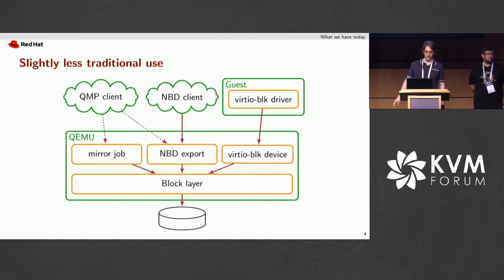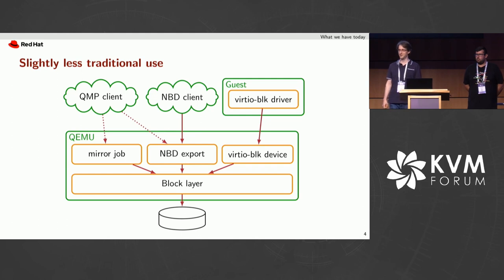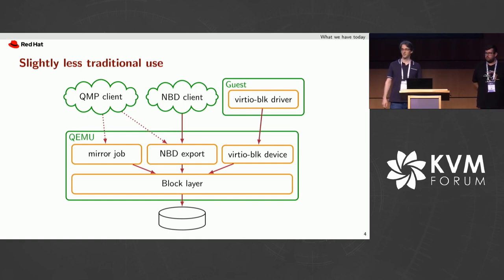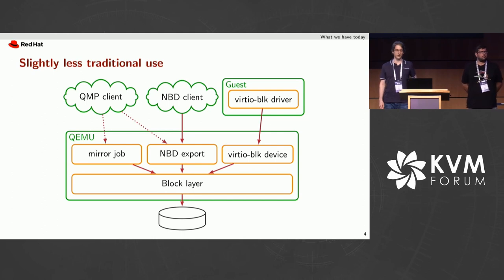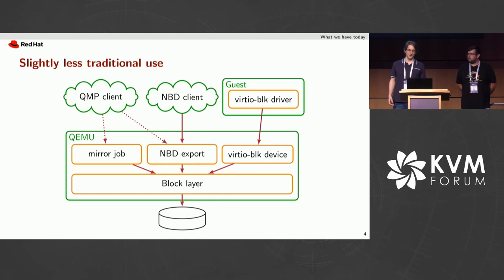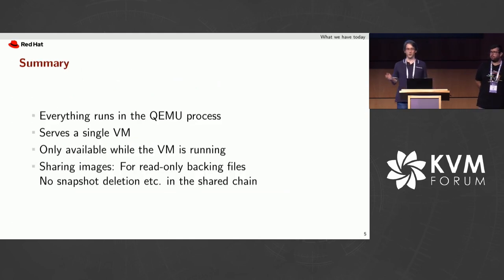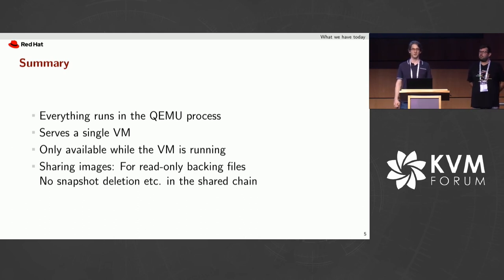Over time, we got a slightly less traditional use case where we had not only devices accessing the image file, but also more advanced things inside of QEMU — such as background block jobs introduced for live storage migration, backups, and managing snapshots. NBD client is also used in the context of storage migration. But still the same thing: one QEMU process that has the image file, everything in one process, serving a single VM. It's only available while the VM is running, so you can't run a block job when no VM is running.